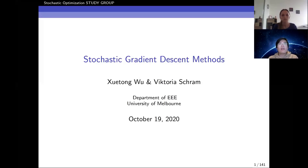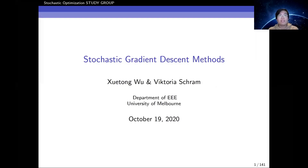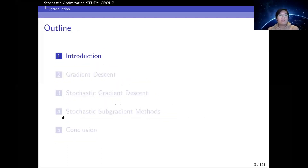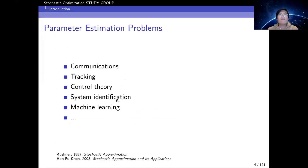Welcome to the stochastic optimization study group. Today I'm going to introduce gradient descent methods and stochastic gradient methods, which are very simple and famous methods in stochastic optimization problems. This talk has two parts: I will first introduce gradient descent and SGD, and Victoria will talk about stochastic subgradient methods for certain scenarios and make some conclusions.